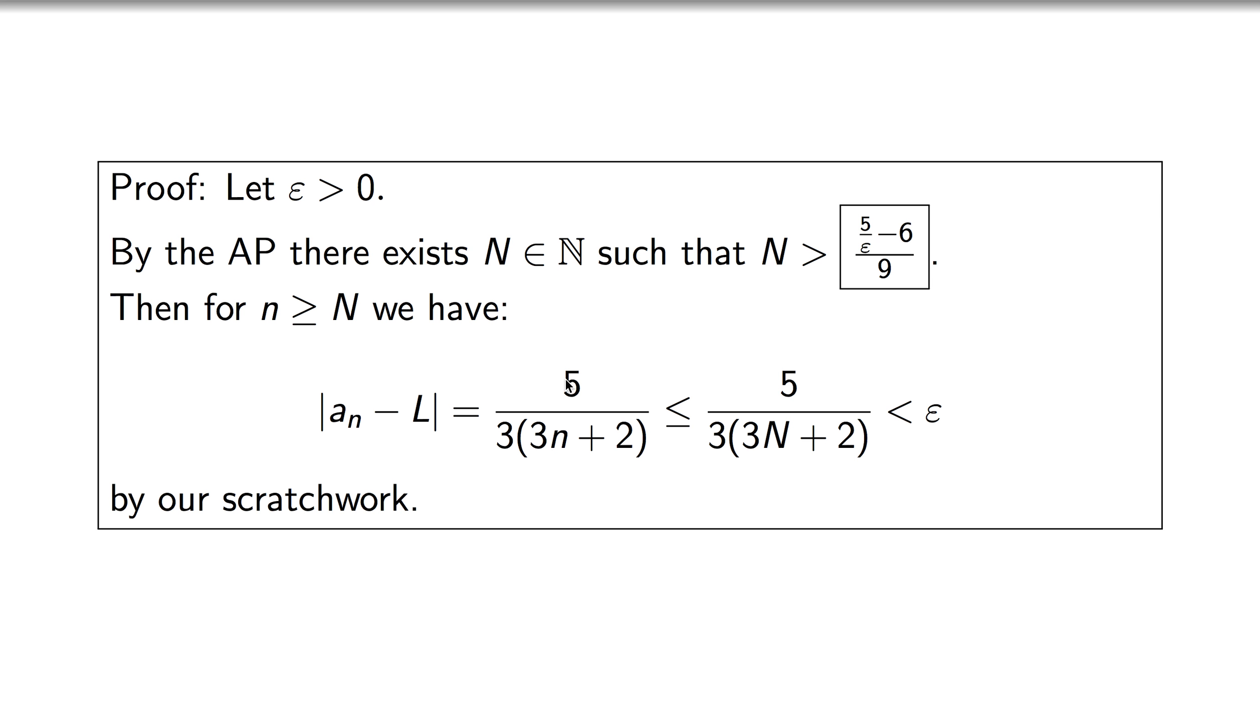This is a good question: why is this smaller, less than or equal, when we swap the little n for the big N? That's because little n is a bigger number, so we've got a bigger denominator here than we do here. And why is this inequality true? Remember on that previous slide in our scratch work, this is going to be smaller than epsilon if and only if n is bigger than this thing up here.